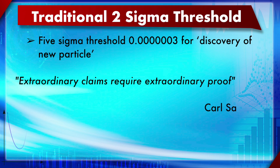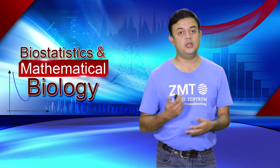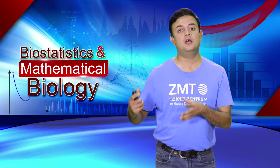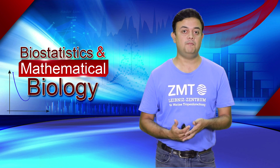There is a very famous statement by Carl Sagan, the renowned astronomer and science communicator who wrote the book 'Cosmos': 'Extraordinary claims require extraordinary proof.' This is why increasingly lower p-value thresholds are used when making extraordinary scientific claims.